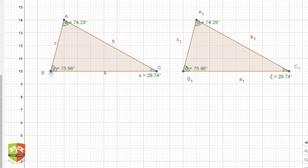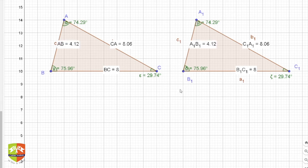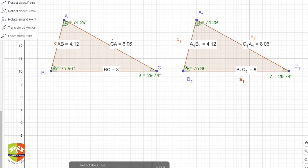To convince you, let's measure the lengths. BC is 8, and B₁C₁ is also 8. CA is 8.06, and C₁A₁ is also 8.06. AB is 4.12, and A₁B₁ is 4.12. In this case, the figures appear to be exactly the same, but there could be cases where they don't appear exactly the same yet are still congruent.